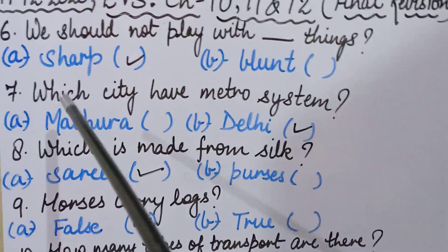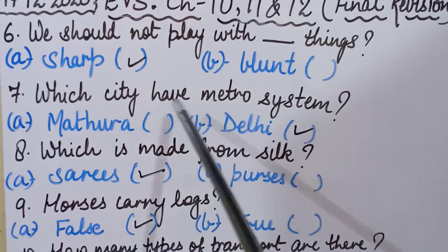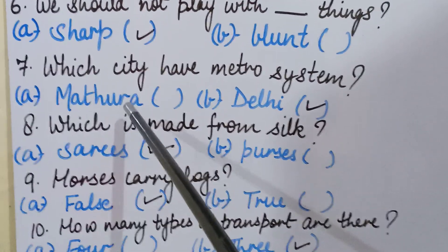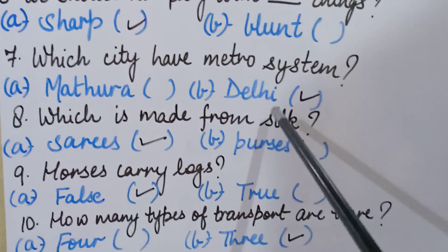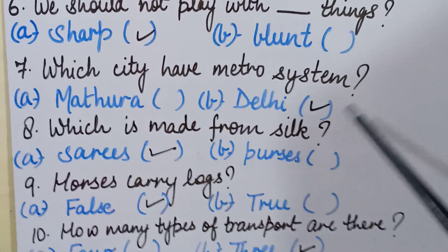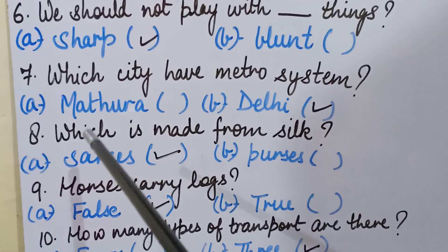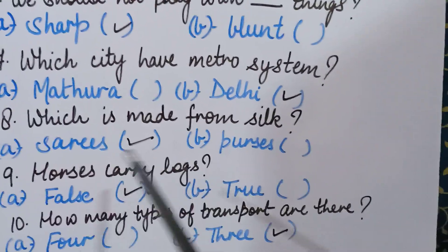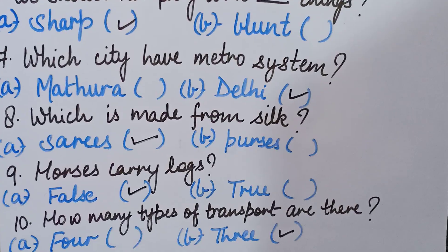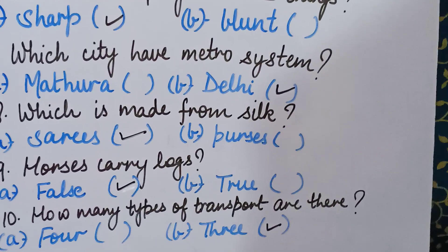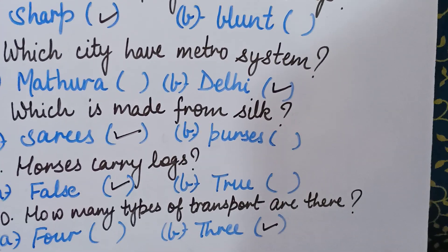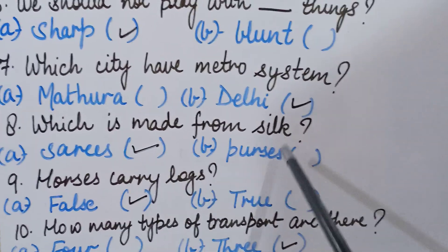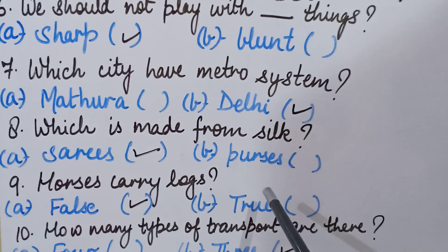Seventh question: which city has a metro system — Mathura or Delhi? The correct answer is Delhi, so we will put a tick in front of Delhi. Eighth question: which is made from silk — saris or purses? The correct answer is saris, because saris are made from silk and purses are made from leather. Tick in front of saris.